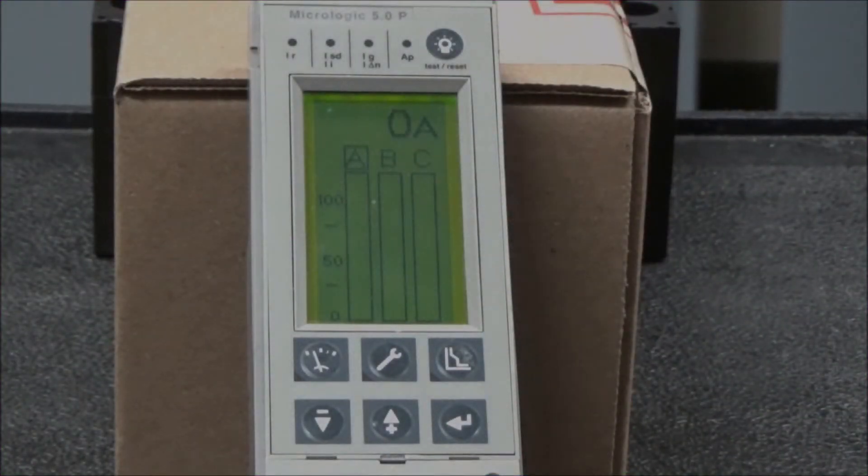In this video we'll be showing you how to fine-tune the amperage settings on a Micrologic 5.0 or 6.0 P or H trip unit.